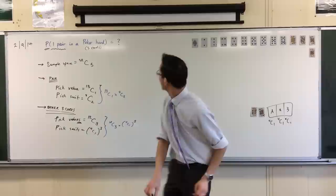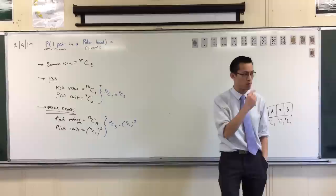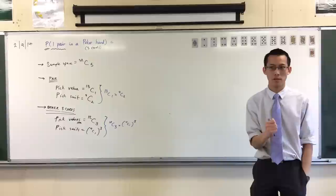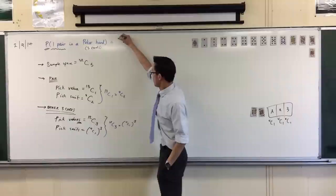So, therefore, coming back up to the top, what is the probability? Well, think about these. Do I add them or do I multiply them to combine them? I must multiply, because I need the pair and the other three cards at the same time. Otherwise, you don't have a hand at all. So, therefore, I take these and I multiply.